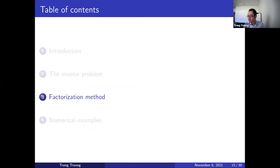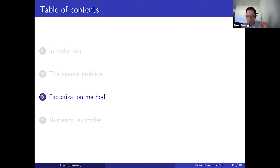Now we look at the factorization method for solving this problem. The idea is that we want to reconstruct the geometry of the structure by building an indicator function. For a point z inside the structure, the indicator function will have a large positive value. If the point z is outside the structure, the indicator function will be zero. If we can construct such a function, then we can produce an image of our structure.